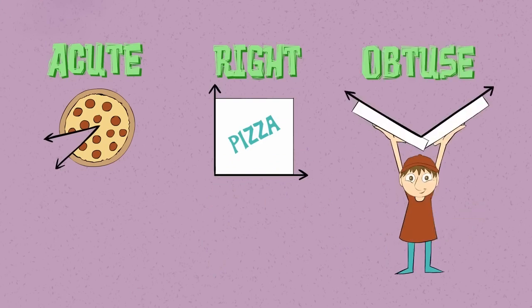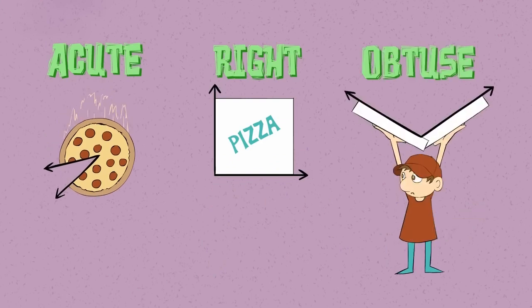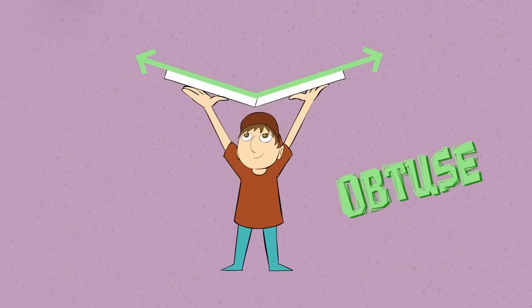And here's how to remember them with ease. From 90 to 180, an angle is a big caboose.